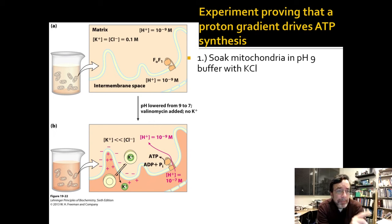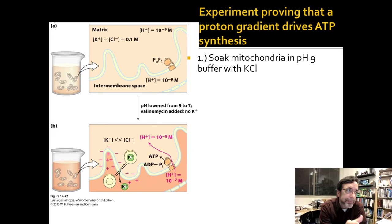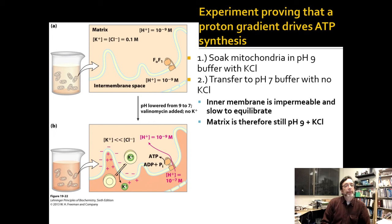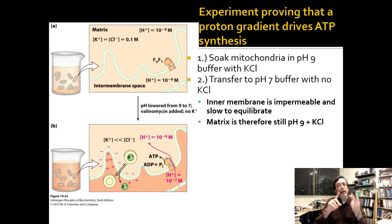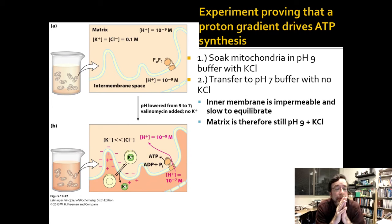So the solution is pH 9 and has a lot of potassium in it. You put the mitochondria in there long enough for them to equilibrate so they are pH 9 inside and outside. Then you take these potassium-rich, pH 9 mitochondria and transfer them to a pH 7 buffer. In the first moments after transfer, the pH 7 buffer easily gets all the way to the inner membrane but doesn't pass into it yet. So you have high potassium, alkaline pH mitochondria on the inside, in a normal solution on the outside — no KCl on the outside, and pH 7 buffer.